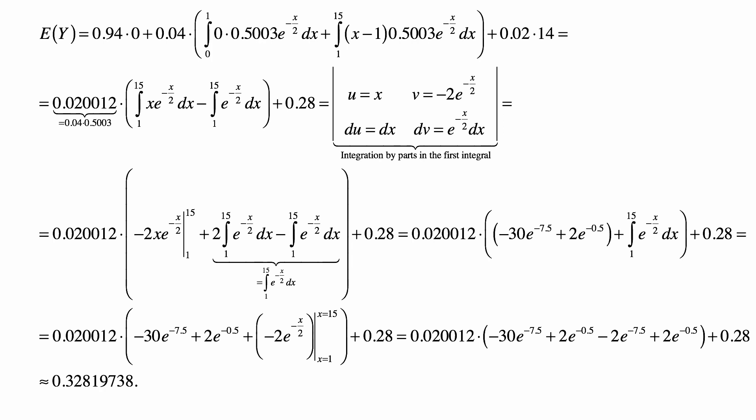So, the expected value is 0.94 times 0, probability of having 0 claim payment times 0.94, which is the amount and 0.94 is the probability, plus 0.04 times...